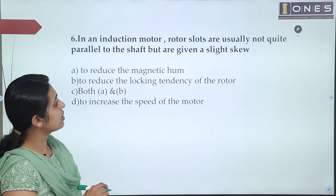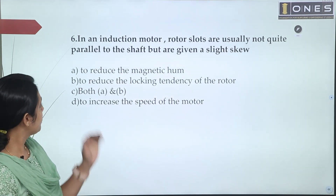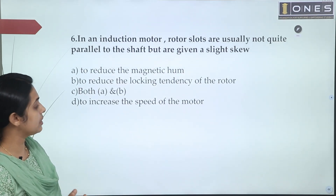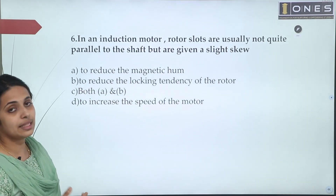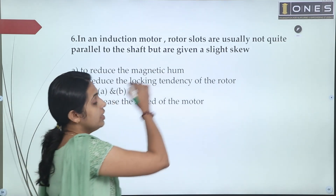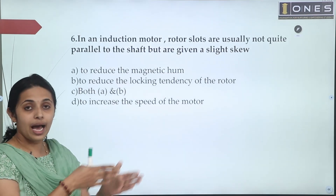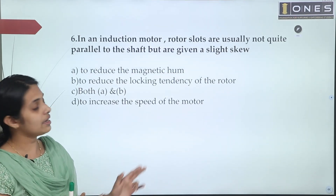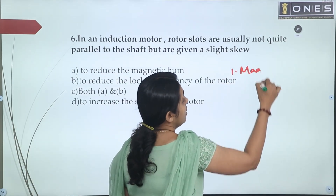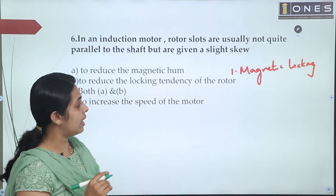Next question: In an induction motor, rotor slots are usually not quite parallel to the shaft, but are given a slight skew. Options: A) to reduce magnetic hum, B) to reduce the locking tendency of the rotor, C) both A and B, D) to increase the speed of the motor. The rotor slots are cut at a slight angle to the axis. One function is to reduce magnetic locking between stator and rotor slots.